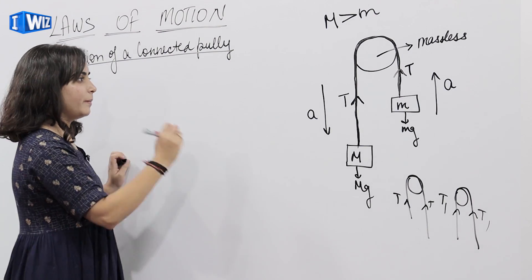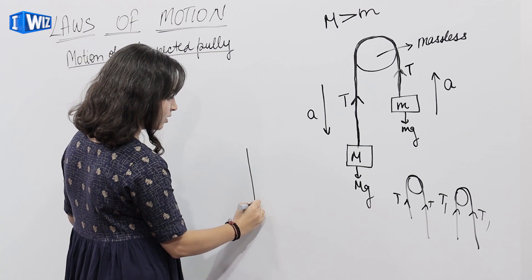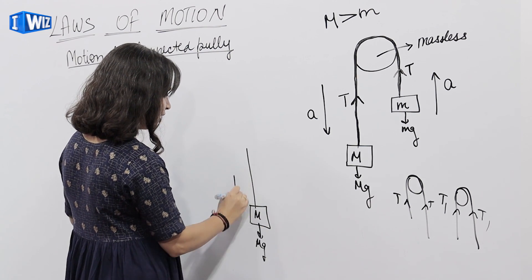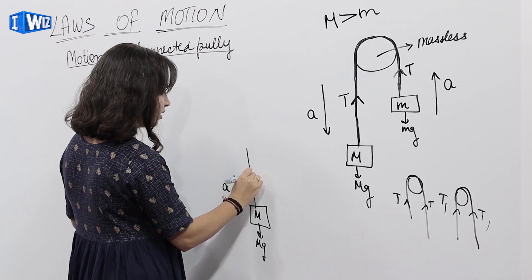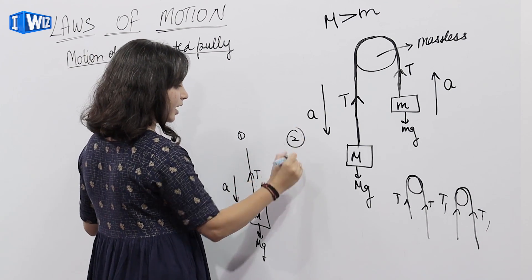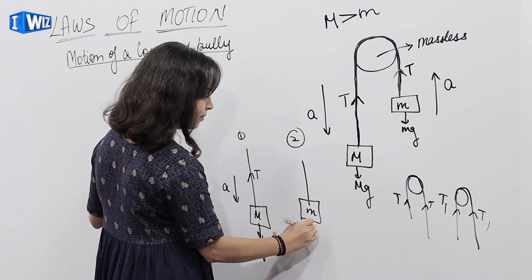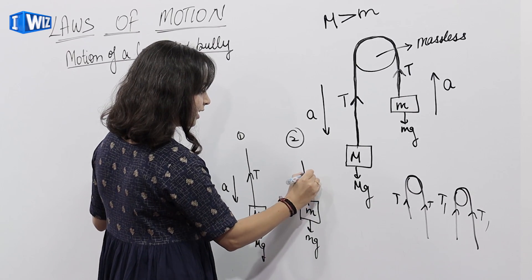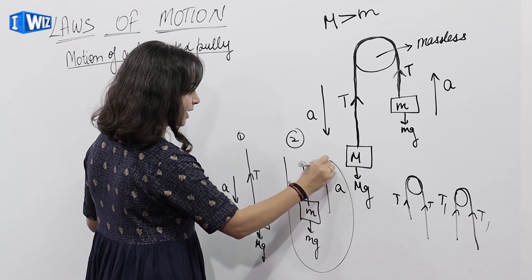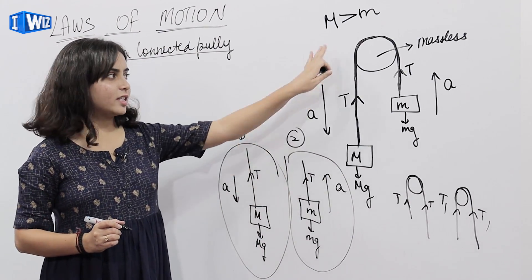तो अगर मैं इस पूरे system को free body diagram में देखूं तो मेरे पास दो systems बनेंगे. First system: capital M — MG downward, acceleration downward, tension T upward. Second system: small m — small mg downward, tension T upward, acceleration upward. So these are the free body diagrams of this system.